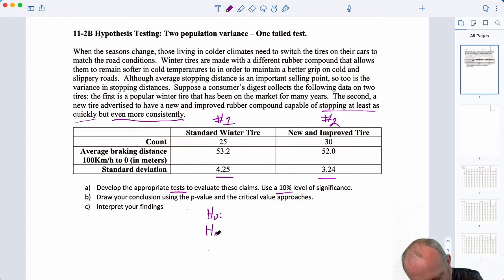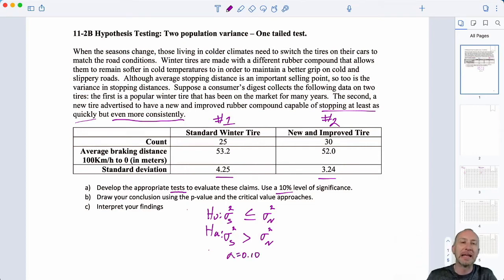Okay, so we have our null and our alternative. I have defined population 1 as the standard tire and population 2 is the new tire. And here we want to see whether or not we have evidence to show that the new tire is even more consistent which is to say it has a lower variance than the standard which is the same as saying that the standard has a higher variance than the new. We are doing this at alpha 0.1 level of significance.